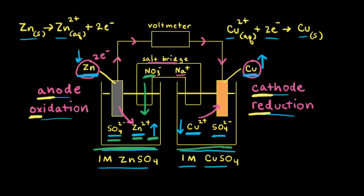In the half cell on the right, we started with equal concentrations of copper two plus cation and sulfate anion. However, over time there's a decrease in copper two plus cation, so there's too much negative charge. To balance the negatively charged sulfate anions, the positively charged sodium cation moves from the salt bridge into the right half cell. A good way to remember the direction: anions go toward the anode, and cations go toward the cathode.